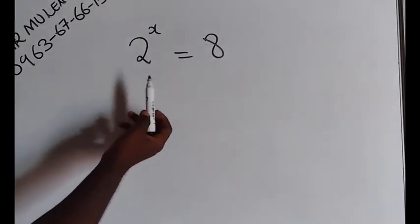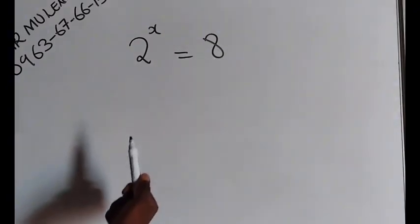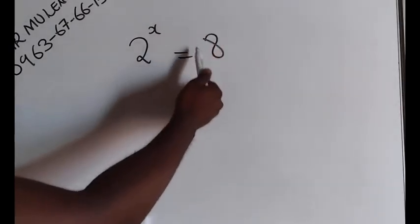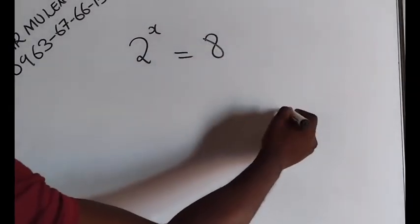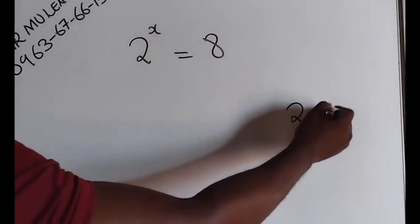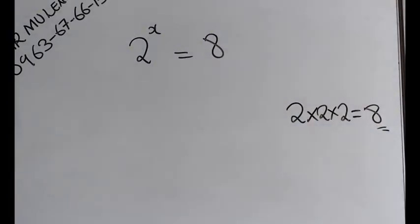We are going to make sure that even to the right-hand side, you have the same base, which is 2. So we have to write this 8 in index form, of which we know if you say 2 times 2 times 2, you multiply 2 by itself 3 times, you are going to get 8.